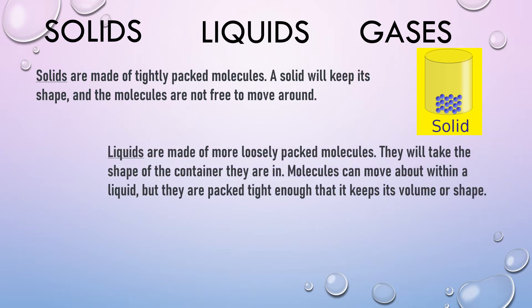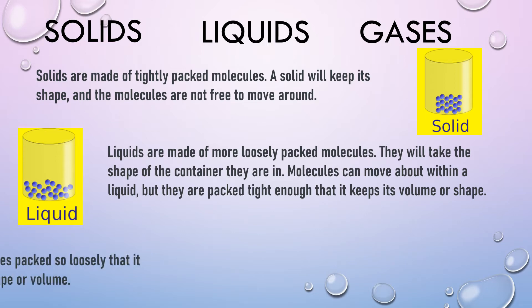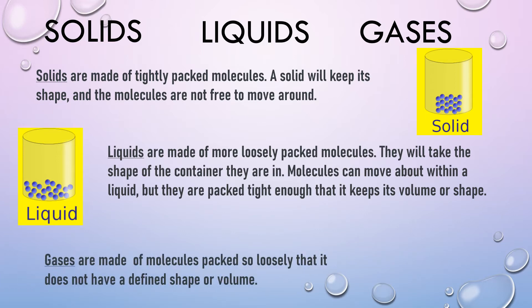Liquids are made of more loosely packed molecules. They will take the shape of the container they are in. Molecules can move about within a liquid but they are packed tightly enough that it keeps its volume. Finally, gases are made of molecules packed so loosely that they do not have a defined shape or volume.